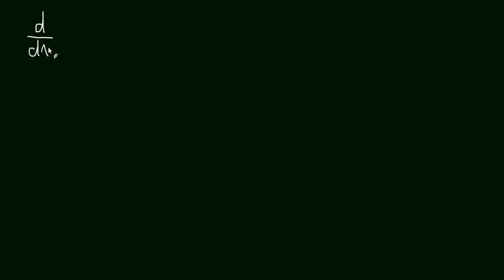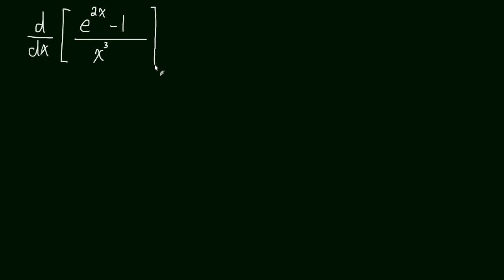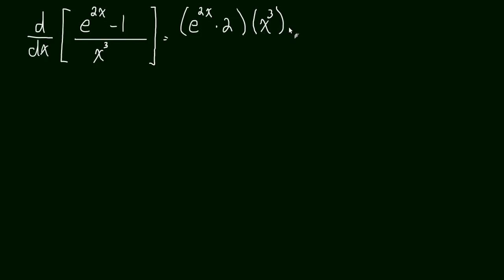Let's try this one without any color coding, because you won't get color coding on a test. Let's try the derivative of e to the 2x minus 1 divided by x cubed. So we take the derivative of the numerator — that's going to be e to the 2x, and we have to remember to use the chain rule: the derivative of the outside times the derivative of the inside, which is the derivative of 2x, which is 2. So e to the 2x times 2, times the denominator just left alone — so that's x cubed.